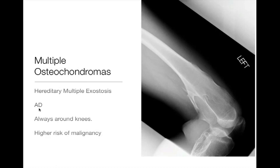Multiple hereditary exostosis is an autosomal dominant syndrome. How do you know one has undergone malignant degeneration? Clinically, pain associated with an osteochondroma is something to worry about — though it may relate to pressure on a neurovascular bundle or altered bone growth. Also consider whether the lesion has grown: as a developing child osteochondromas are allowed to grow, but once growth plates are fused the osteochondroma shouldn't be growing. Any growth after skeletal maturity is worrisome.